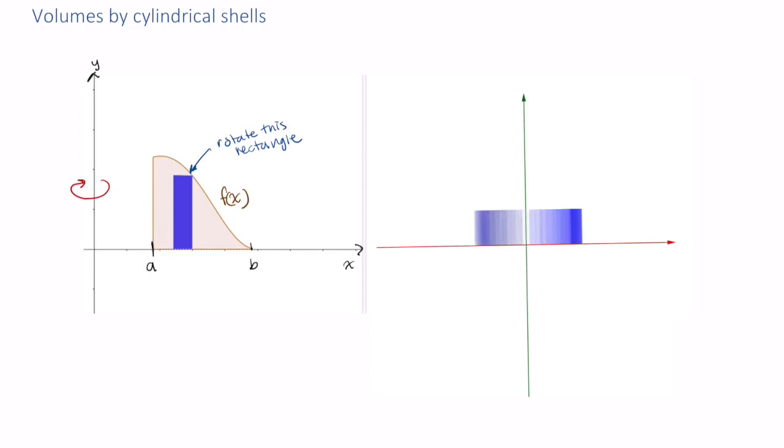As you can see, as this rotates about the y-axis, that blue rectangle forms a cylindrical shell—a hollowed-out cylinder with some thickness.